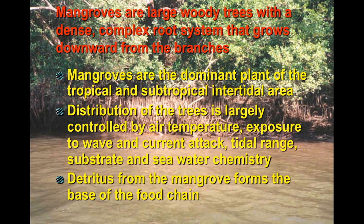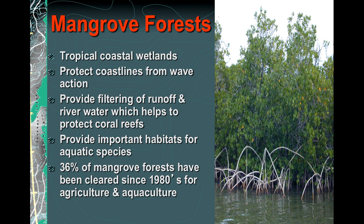Mangroves are trees located in swampy, saltwater areas. They actually reduce high salinity levels, so they're great when water is flowing back into a land system — decreasing salinity. Unfortunately, many mangrove trees have been cut down due to demand for their timber, and 36% of mangrove forests have been cleared since the 1980s. This is dramatic and is causing significant changes to that ecosystem.